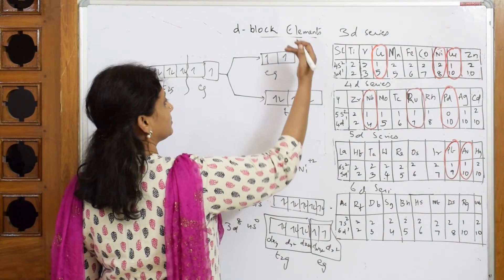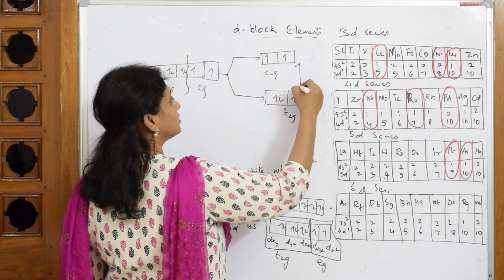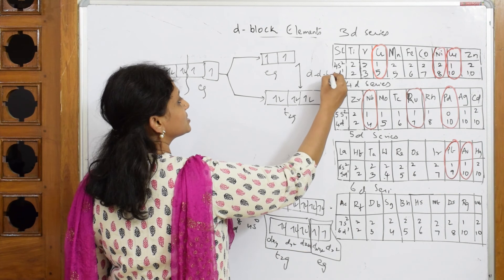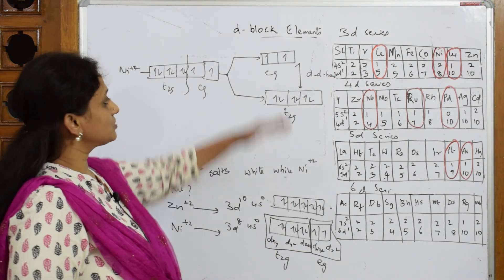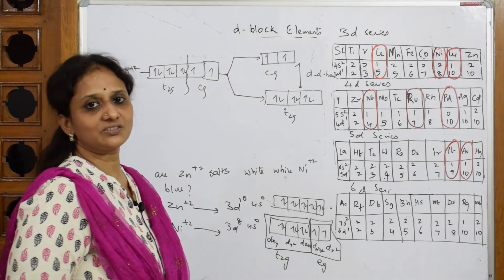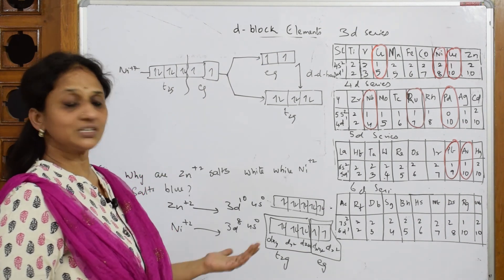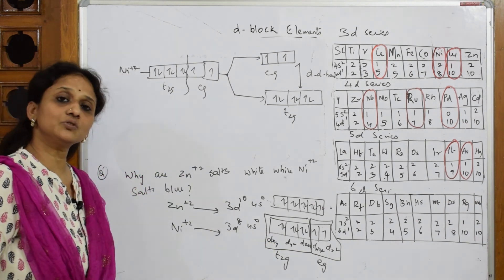Now further when it is supplied one more electron, so this transition, d to d transition, is called - because of this it's going to show color property.